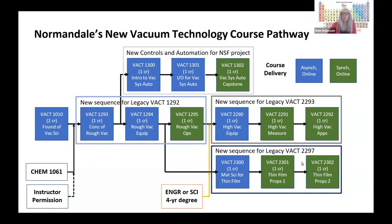Down here, we have a series of three courses related to thin films. We have the material science course, which covers deposition techniques, and then two courses on properties of thin films, which describe characterization of the films — including mechanical, thermal, magnetic, electrical, and optical properties. Up at the top, we have a series on vacuum system automation. The first course covers manuals and schematic diagrams, the second covers input-output devices, and the capstone allows students to create their own human-machine interface.